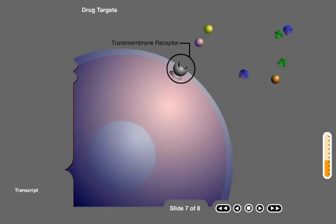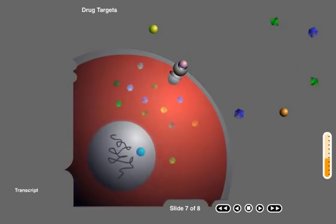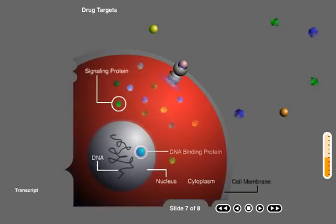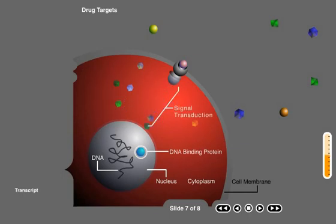Typically, the ligand-receptor interaction leads to a conformational change in the receptor that in turn triggers a chain of protein-protein and protein-molecule interactions within the cell.